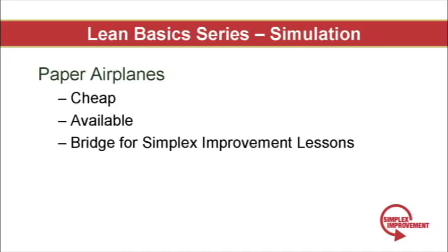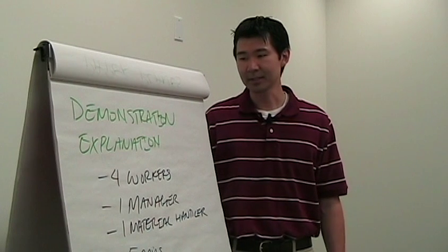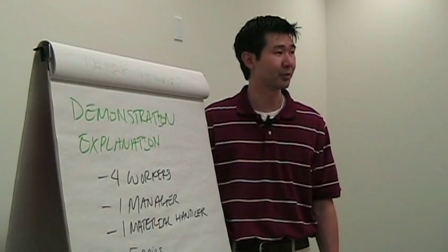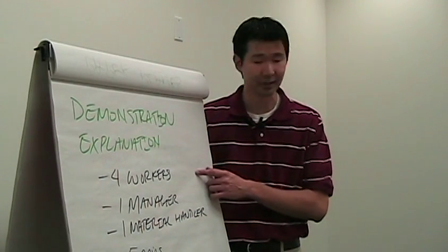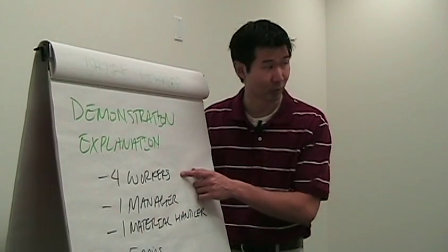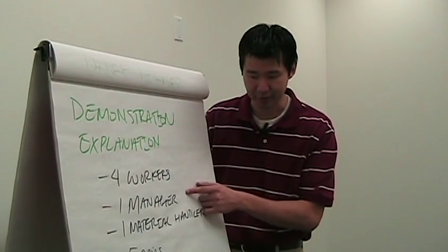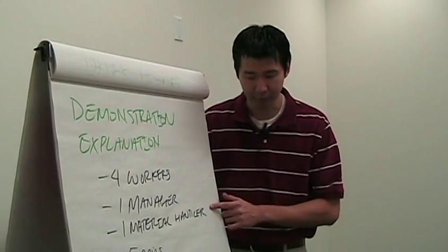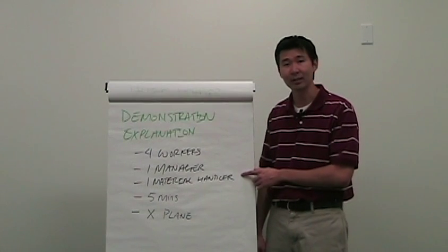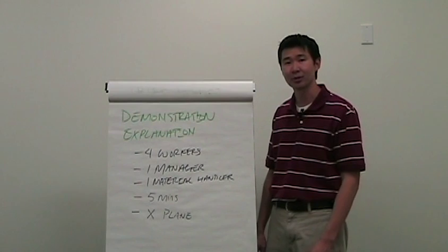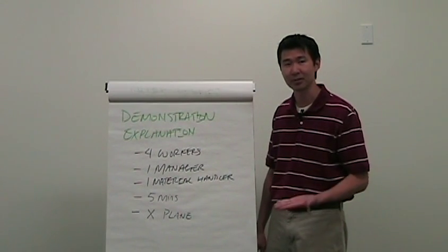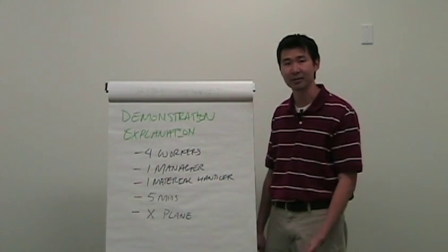So pay attention and if you have problems following along, go ahead and download the instructions off the site. The paper airplane simulation is really easy, but let me explain how it runs. You need six total volunteers: four will serve as workers, one will be a manager, one will be a material handler. Each run lasts for five minutes and there's something called an x-plane that'll show us how long it takes to build a plane from start to finish using different scenarios.